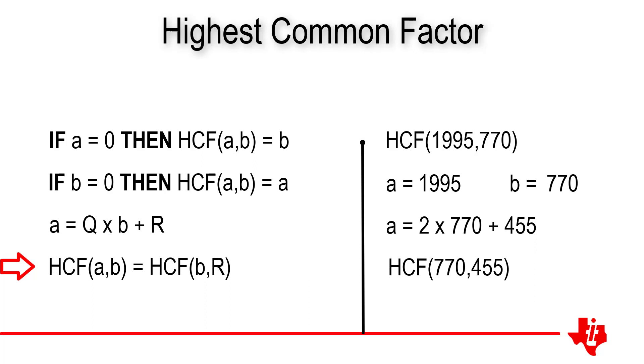So now we repeat the algorithm. Neither a nor b is equal to 0. So we calculate 770 divided by 455. In this case we see that 455 divides just once into 770 with the remainder of 315. So the highest common factor of 1,995 and 770 will be the same as the highest common factor of 455 and 315.